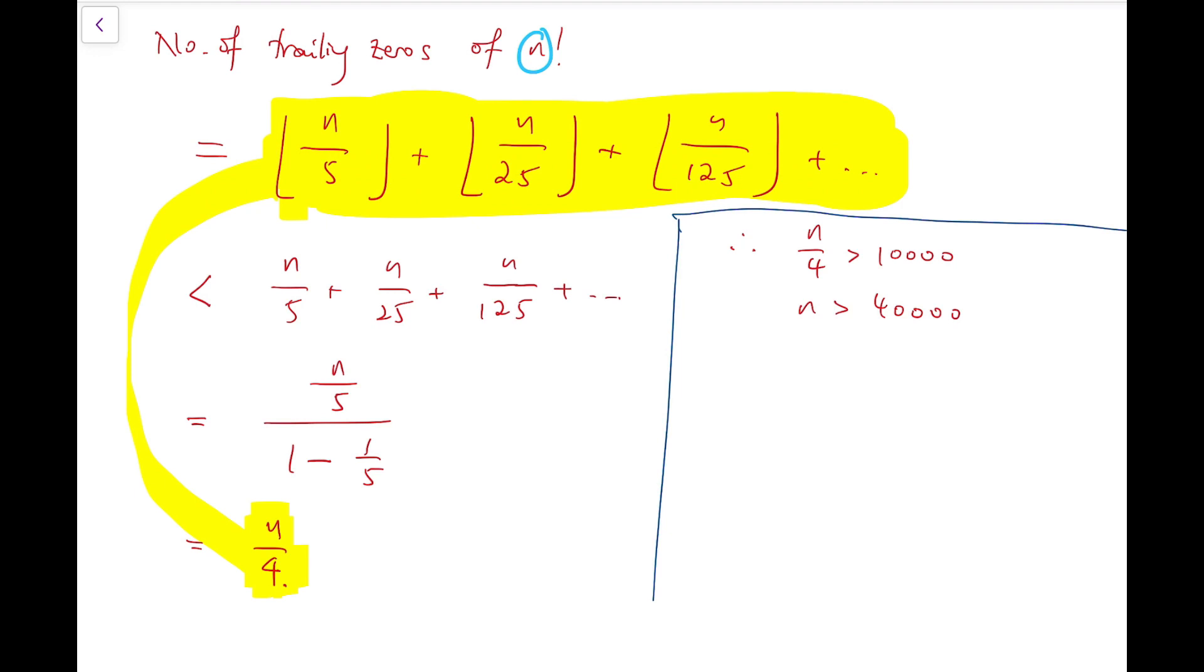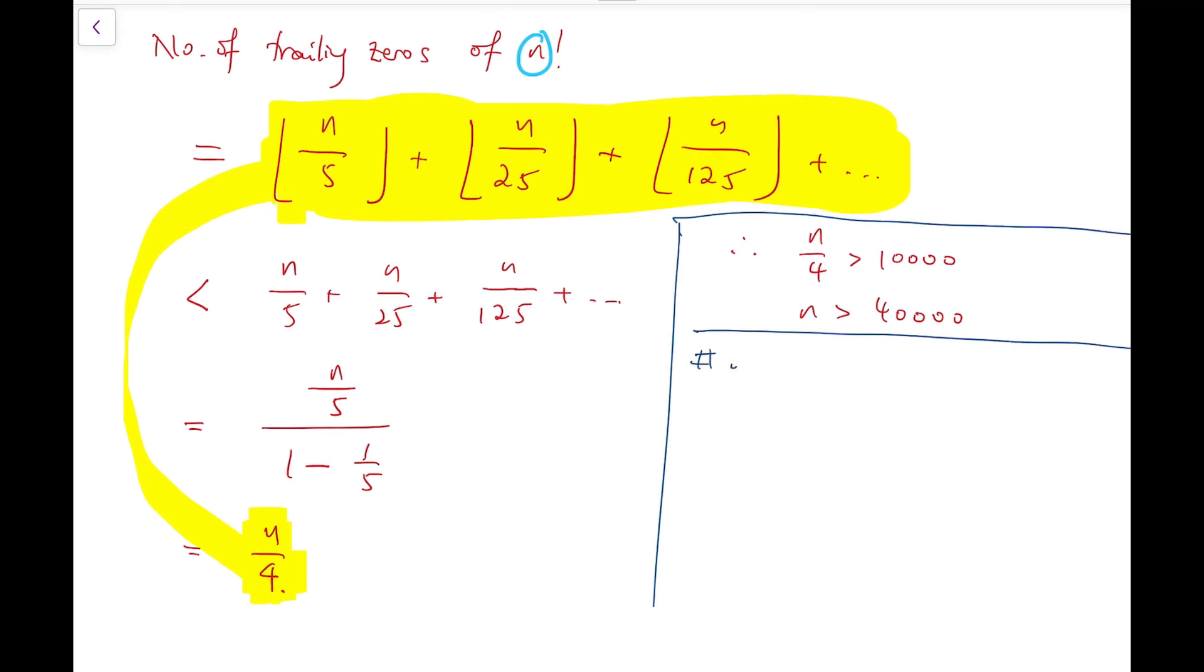So, after establishing a bound, then we can try the value of 40,000, and see how far this number is from our answer. In fact, number of trailing zeros of 40,000 factorial is the sum of these floor functions, and the numbers are 8,000, 1,600, 320, 64, 12, and 2. And the terms afterwards are all 0, so we ignore them. And in fact, after that, we can say that the series has actually terminated. So, the sum of these numbers are 9,998.